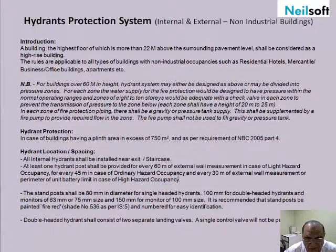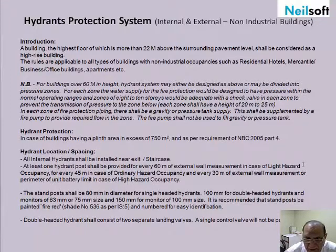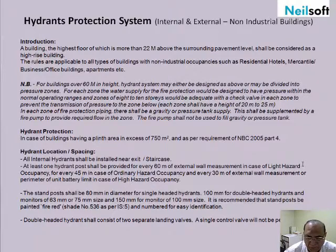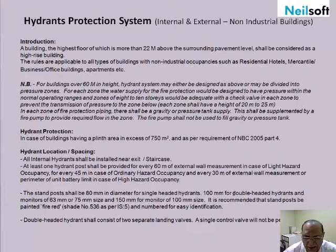At least one hydrant post shall be provided for every 60 meters of external wall measurement in the case of light hazard. For ordinary hazard occupancy, spacing should not exceed 45 meters. And for high hazard — generally industrial hazards or liquid fuels — hazardous materials should not be placed more than 30 meters spacing.